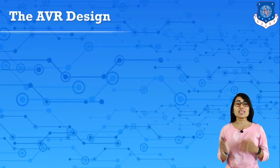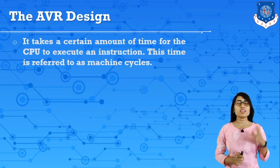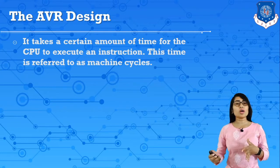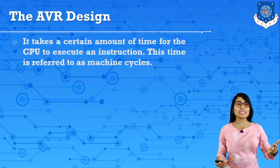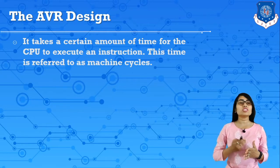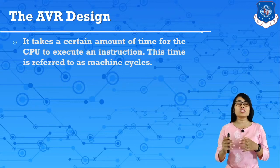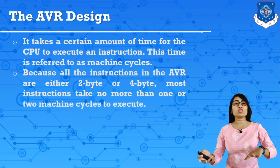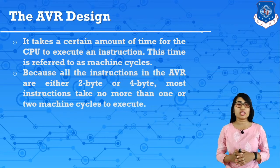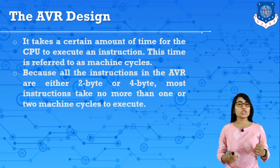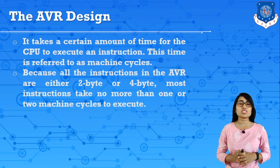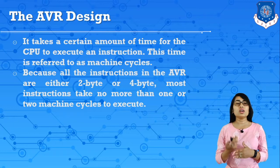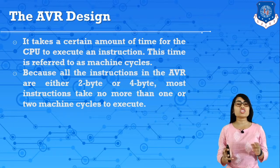The second factor is AVR design. For some AVRs there are different amounts of execution cycles for instructions. It takes a certain amount of time for the CPU to execute an instruction, referred to as a machine cycle. According to AVR design, there are variations in machine cycles per microcontroller. Because all instructions in AVR are either 2-byte or 4-byte, most instructions take no more than 1 or 2 machine cycles to execute.